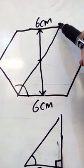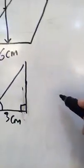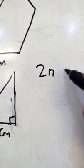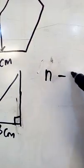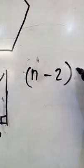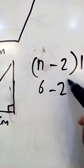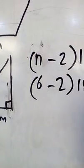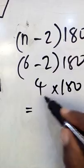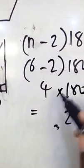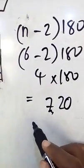Now in order to find the size of one of the interior angles, I'll simply use (n-2) times 180. In this case it's a hexagon, so that's going to be (6-2) times 180. That's 4 times 180, and that will give me 720.